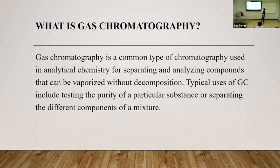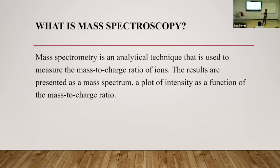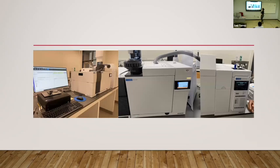What is gas chromatography? Gas chromatography is a common type of chromatography used in analytical chemistry for separating and analyzing compounds that can be vaporized without decomposition. Typical uses of GC include testing the purity of a particular substance or separating the different components of a mixture, which is what we do in the lab. Mass spectrometry is an analytical technique used to measure the mass-to-charge ratio of ions of a compound. The results are presented as a mass spectrum, and we get intensity as a function of the mass-to-charge ratio. This is the machinery that we use — we put our substances in, get a graph, and see the concentrations of whatever substance we're testing.